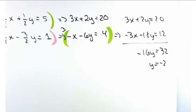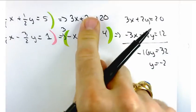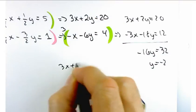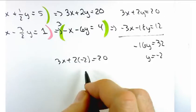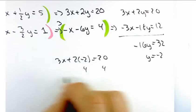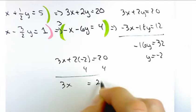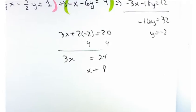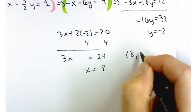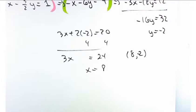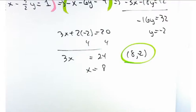Now, if y equals negative 2, what do I do to find x? Yeah, plug it back in. So, I'm just going to choose this top equation. It's going to be 3x plus 2 times negative 2 equals 20. So, if I add 4 to both sides, I get 3x equals 24 or x equals 8.